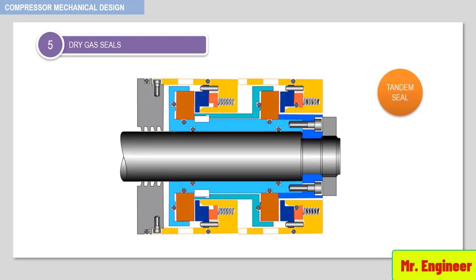Finally, in the tandem seal arrangement, two single seals are placed in series on the shaft. The seal on the product side and the seal on the atmospheric side are each able to absorb the complete pressure difference. In normal operation, the seal on the product side reduces the complete pressure on its own. The space between the two seals leads to a flare, and the pressure difference sealed by the atmospheric-side seal corresponds to the flare pressure, resulting in very little leakage. If the main seal fails, the second seal comes into effect and protects the compressor.